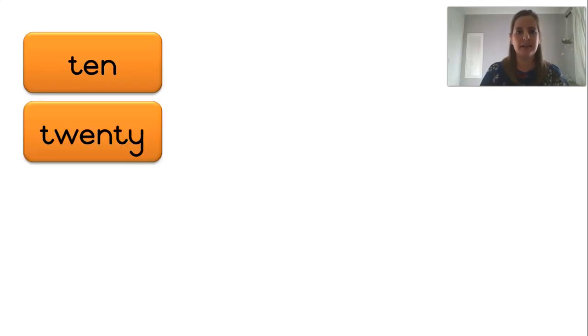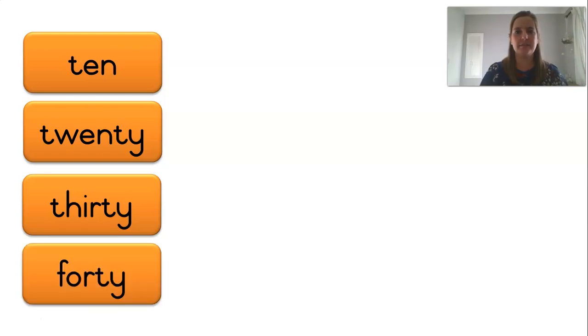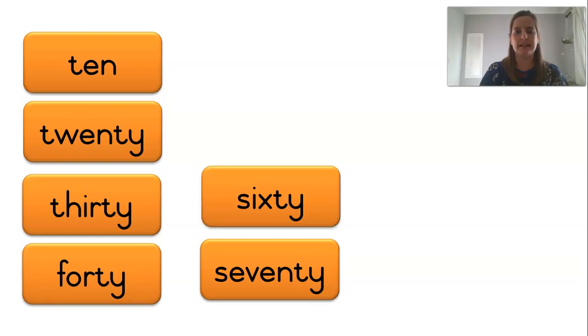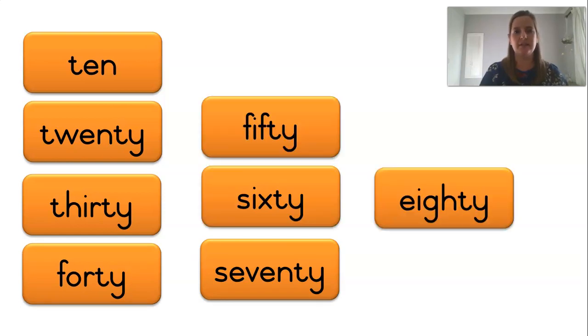Now, we're going to do some more numbers that you probably know or you can read, but we need to practice them. Okay. So, let's do them one at a time. You know that one is ten and twenty. Those ones you know. How about this one? Thirty. Thirty. Forty. Seventy. Sixty. Fifty. Eighty. Ninety.